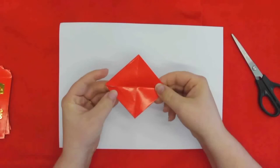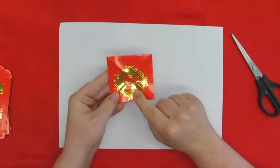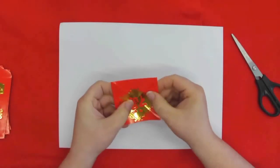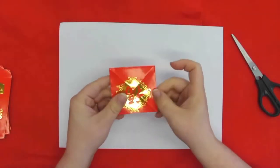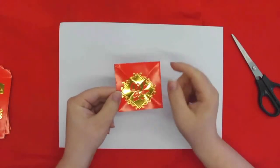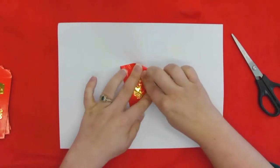Open it back up, you'll see that X shape in the crease. Flip it over because you want this side to be on the outside. That's going to be inside and this is going to be outside. So each corner you need to bring into the middle. Fold in each corner to the middle, that X that you made.